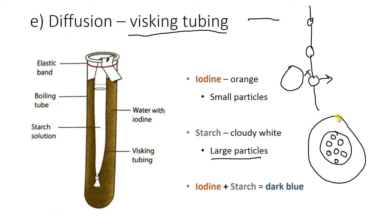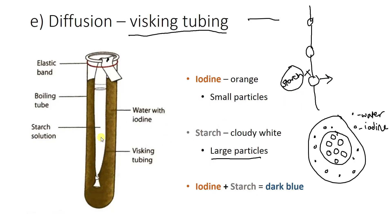Surrounding the visking tubing, we have a solution of water with iodine. So we've got some water molecules and also some iodine — maybe they're a little bit bigger with a bit of space in the middle. At the partially permeable membrane, or selectively permeable membrane, these big starch particles can't get through to the other side. There's a high concentration of starch inside because there's none on the outside, so it wants to move and reach equilibrium, go down that concentration gradient — but it can't.